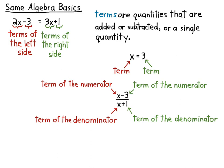x is not a term of this whole expression. In fact, this whole expression is a term. So there's different levels - there's the big level, and then as you break down into smaller parts of it. So the numerator has two terms. The denominator has two terms, x and 1. The whole thing is just a single term.